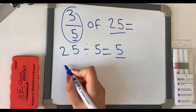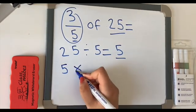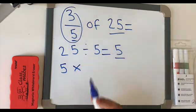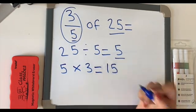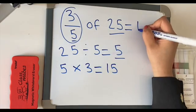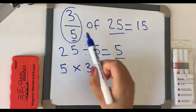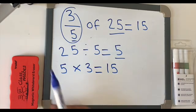We then take the 5, we times that by our numerator, which is 3. 5 times 3 is 15. So the answer is 15. Three-fifths of 25 equals 15.